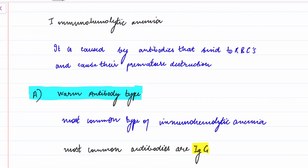Hello friends, welcome to my channel. I'm Dr. Himanshu Gupta, and today in this video we are going to discuss a very important topic for NEET PG: immunohemolytic anemia. It is also known as autoimmune hemolytic anemia. The term immunohemolytic anemia is preferred because it is not only due to the body's own cells.